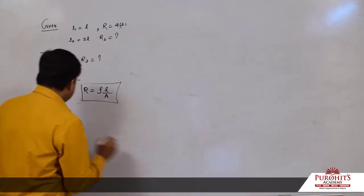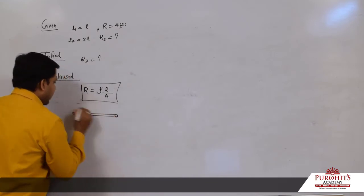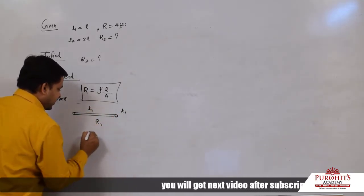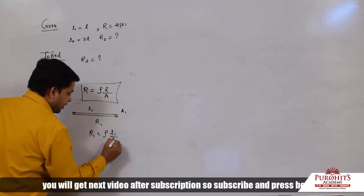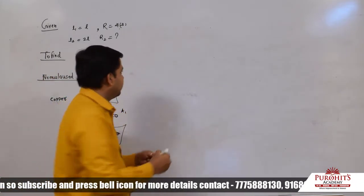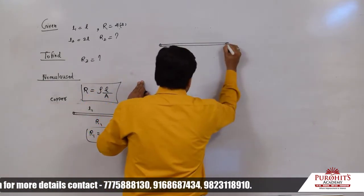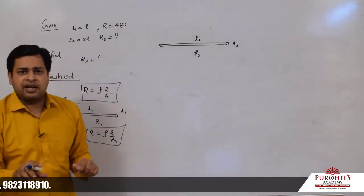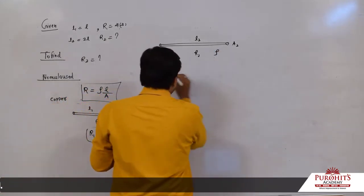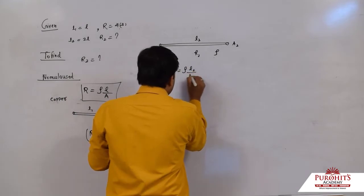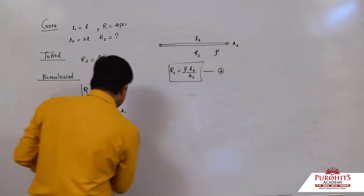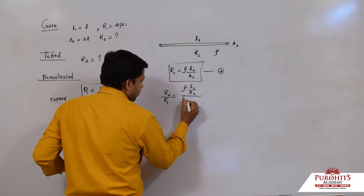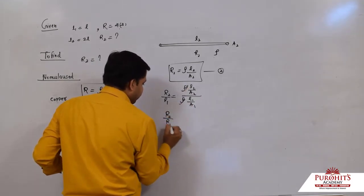I have taught this concept before, but let me explain again. Initially you have a copper wire of length l₁, cross-sectional area A₁, and resistance R₁, so R₁ = ρl₁/A₁. Now you stretch it — length increases to l₂, area becomes A₂, resistance becomes R₂. Since the material is still copper, resistivity ρ remains the same. So R₂ = ρl₂/A₂, and R₂/R₁ = (l₂/l₁) × (A₁/A₂).